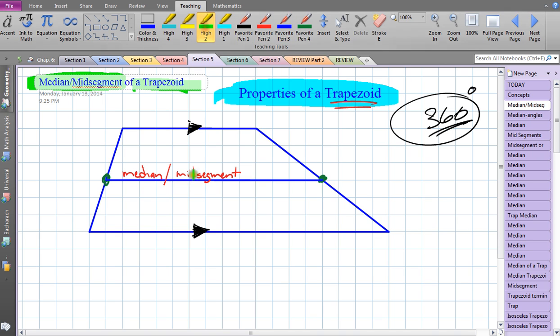In order to be a mid-segment or a median, we need that segment to start at the midpoint of one leg of the trapezoid and it goes to the other leg of the trapezoid on the other side, the midpoint of the other leg. So you can't draw the mid-segment down here, it just doesn't work. It has to be going to the midpoints of the two legs on both sides.